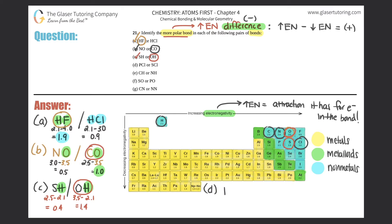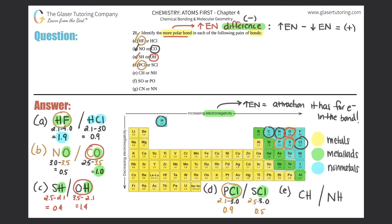For part d, PCl versus SCl. Chlorine is the same in both at 3.0. Phosphorus is 2.1 and sulfur is 2.5. For PCl: 3.0 minus 2.1 gives 0.9. For SCl: 3.0 minus 2.5 gives 0.5. Since 0.9 is higher, PCl is the more polar bond — that's the answer for d.